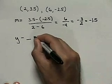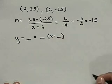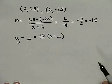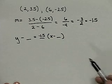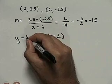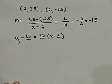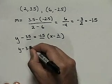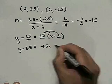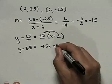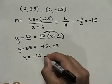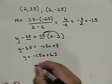Now using the point-slope form, y minus y1 equals the slope times x minus x1, with slope negative 1.5 and point 2, 3.5. So x sub 1 is 2 and y sub 1 is 3.5. Distributing the negative 1.5 gives negative 1.5x plus 3. Adding 3.5 to both sides, we end up with y equals negative 1.5x plus 6.5. That's our final answer.